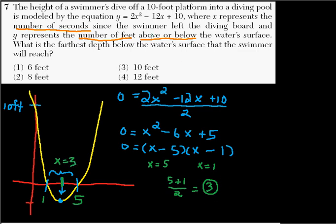Now we just take x equals 3 and put it back into the equation. So when x equals 3, we have 2 times 3 squared minus 12 times 3 plus 10. Okay, that's 3 squared is 9, times 2 is 18, minus 12 times 3 is 36, plus 10.